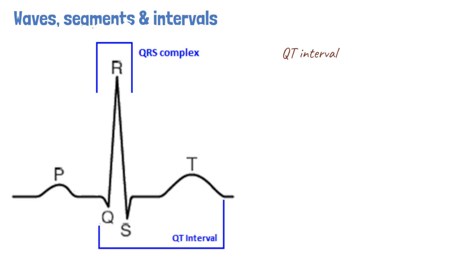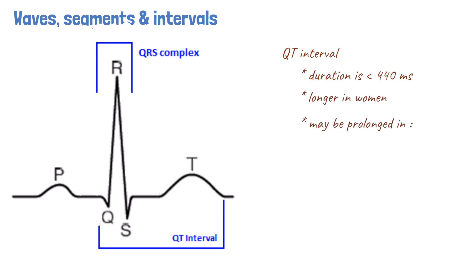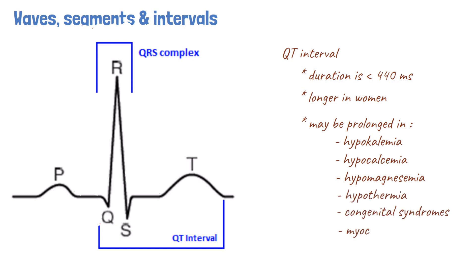The QT interval commences at the start of the QRS complex and ends at the end point of the T wave. It represents the duration of time taken for the ventricles to depolarize and repolarize. The normal QT interval is less than 440 ms under normal circumstances and tends to be longer in women. There are numerous causes of prolonged QT interval including electrolyte disturbances such as hypokalemia, hypocalcemia and hypomagnesemia. Other causes of prolonged QT include hypothyroidism, congenital syndromes and myocardial ischemia.